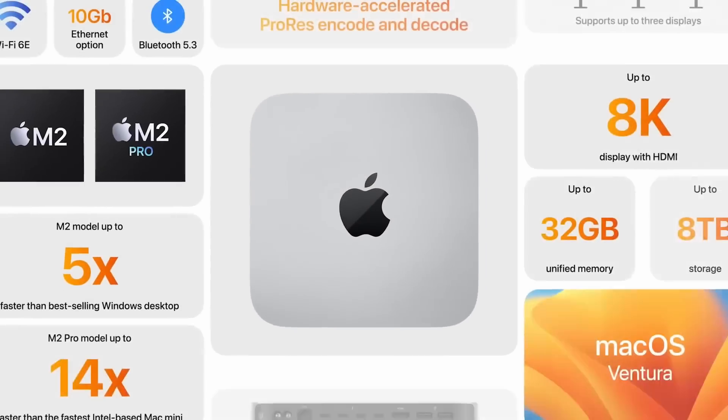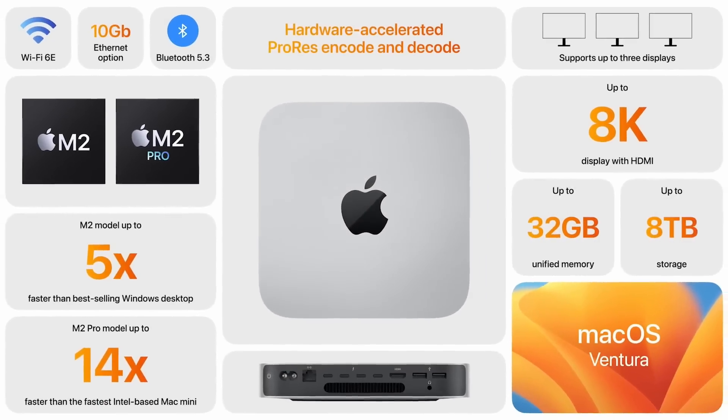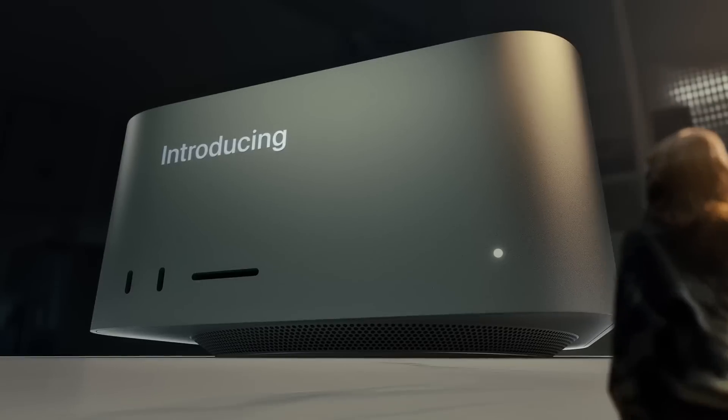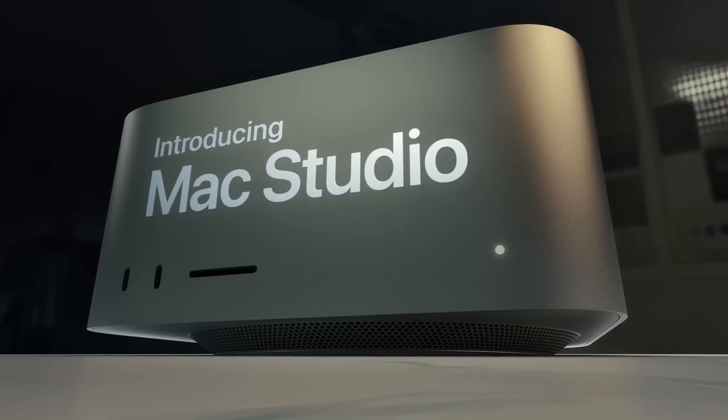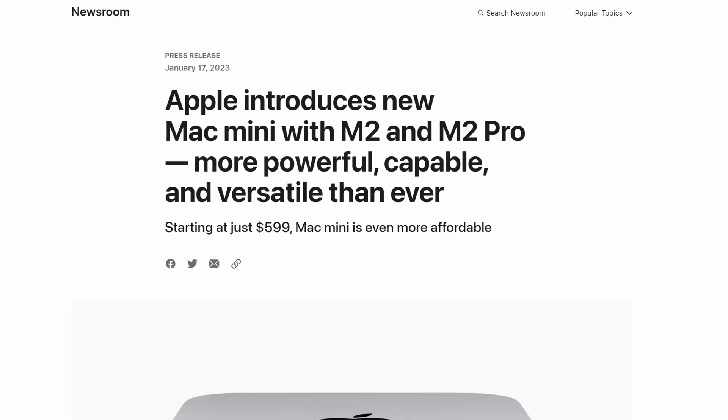If you're in the market for a mid-range Mac desktop computer, your choices are either the M2 Pro Mac Mini or the M1 Max Mac Studio. We'll take a look at all the similarities and differences between these two machines so you can decide which one will better suit your needs.